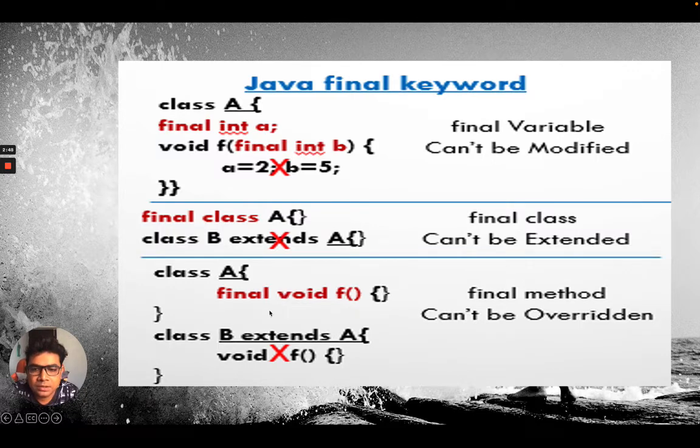And in the third example, you can see a final method cannot be overridden where in class a, we have defined a function f and the class b extends a, if we'll try it class b try to override the method, it cannot be done, it will throw the error. But overloading is possible. Overriding is not possible in case of final.